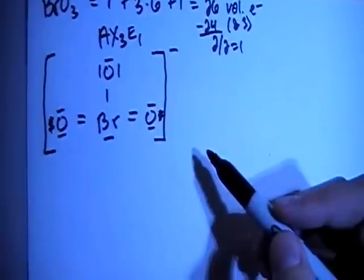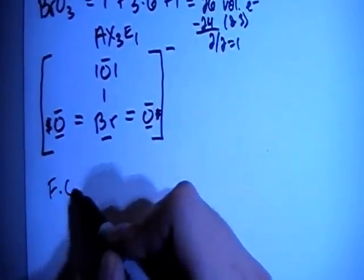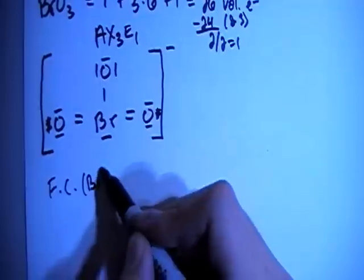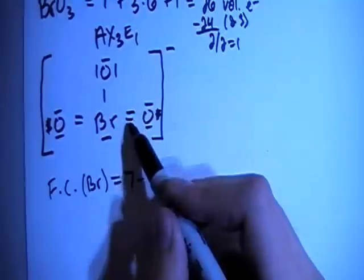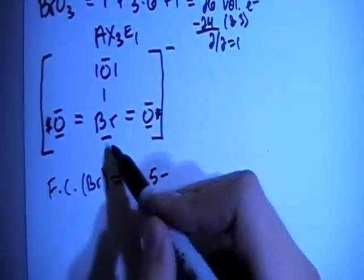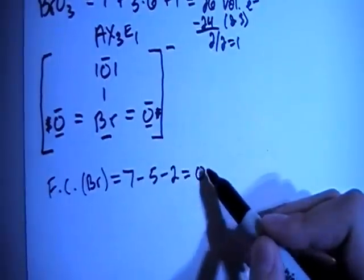So let's go ahead and check the formal charges just to make sure that this is correct. The formal charge on the bromine now is going to be the 7 valence brought in minus 1, 2, 3, 4, 5 bonds minus 1, 2 non-bonding electrons for a formal charge of 0.